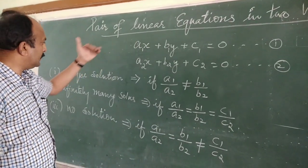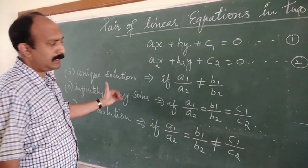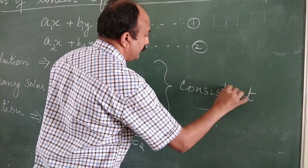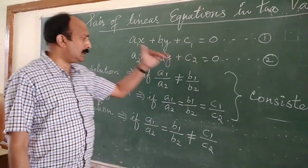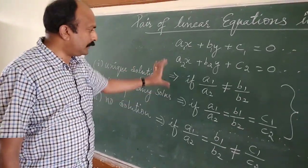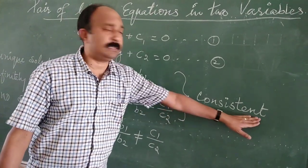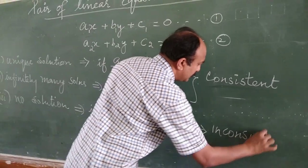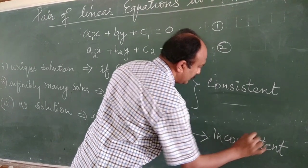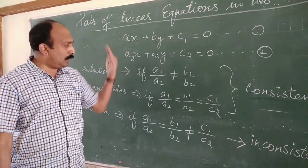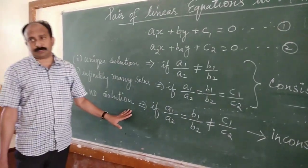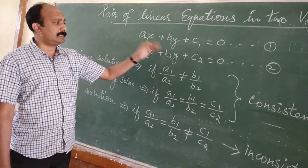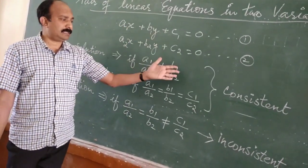One more point: if a system of linear equations has either a unique solution or infinitely many solutions, in both cases the system is said to be consistent. If the system has no solution, then the system is said to be inconsistent. So consistent means having a unique solution or infinitely many solutions; inconsistent means having no solution. Using these conditions we can check whether a pair of linear equations is consistent or inconsistent.